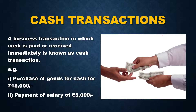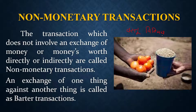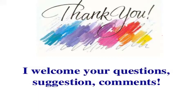A cash transaction means cash is paid immediately at the time of the transaction. A credit transaction means cash is paid or received at a later date — goods are sold on credit but cash is not received simultaneously. A non-monetary transaction is best exemplified by the barter system, where money is not involved at all. If you like this video, please like and subscribe to my channel and share it with your friends. Thank you, bye bye.